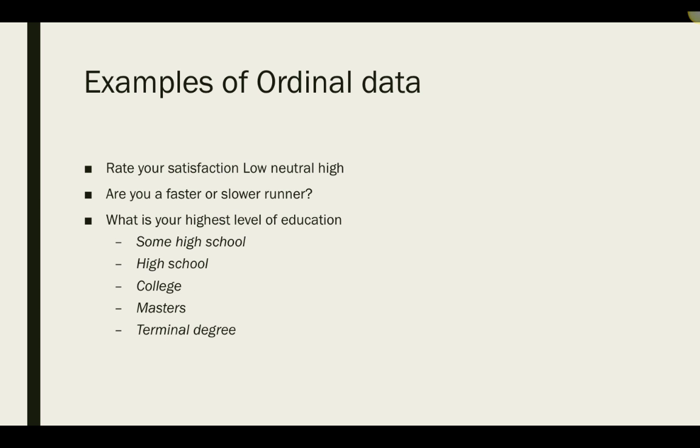Whereas ordinal data has ranking or order, such as rate your satisfaction. Are you a faster or slower runner? One would rank higher than the other. What is your highest level of education? Ranking from some high school all the way up to a terminal degree. This ranking creates order or ordinal data.